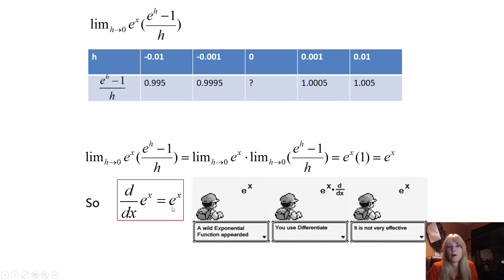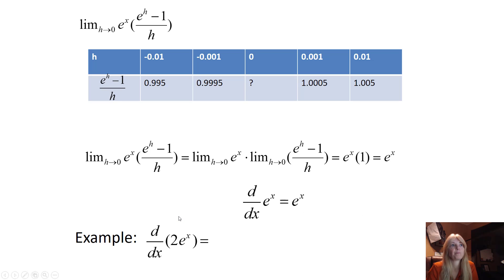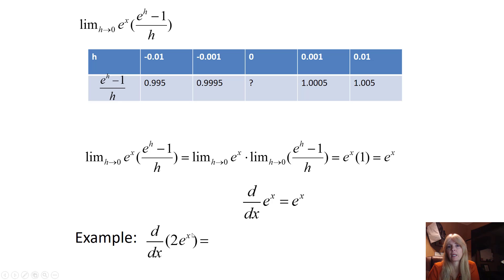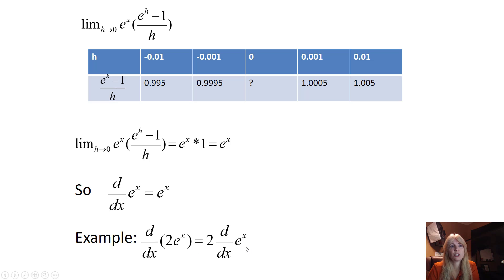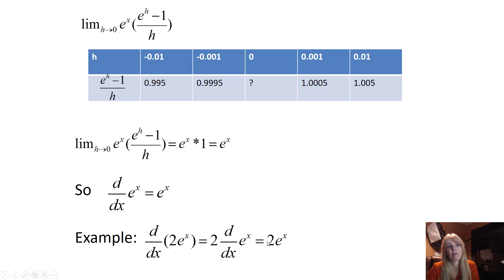The derivative of e^x is the function e^x — all students love this one. So if I want the derivative of 2e^x, remember the constant rule: bring the constant out front and take the derivative of the function. The derivative of e^x is e^x, so the derivative of 2e^x is 2e^x.